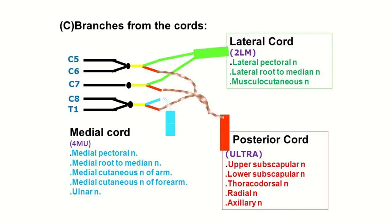A useful mnemonic for the posterior cord branches is ULTRA: U for upper subscapular, L for lower subscapular, T for thoracodorsal nerve, R for radial nerve, and A for axillary nerve. So from the posterior cord, there are five nerve derivatives remembered by the mnemonic ULTRA.